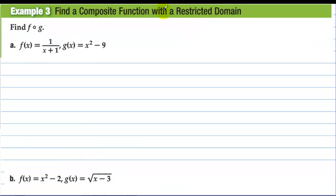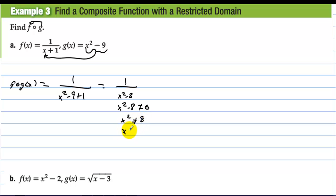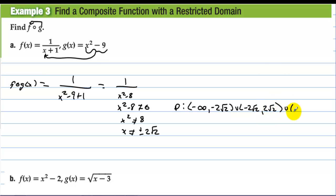Find a composite function with a restricted domain. For f(g(x)), we plug g, which is x squared minus 9, into f. So f(g(x)) equals 1 over (x squared minus 9 plus 1), which is 1 over (x squared minus 8). The denominator cannot be zero, so x squared cannot equal 8, meaning x cannot equal plus or minus 2√2. The domain is (-∞, -2√2) ∪ (-2√2, 2√2) ∪ (2√2, ∞).